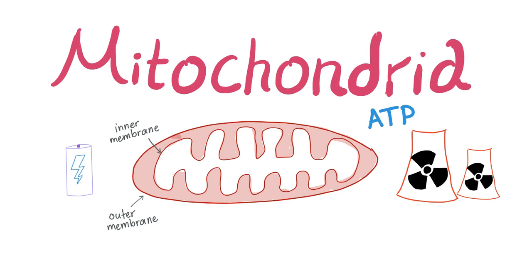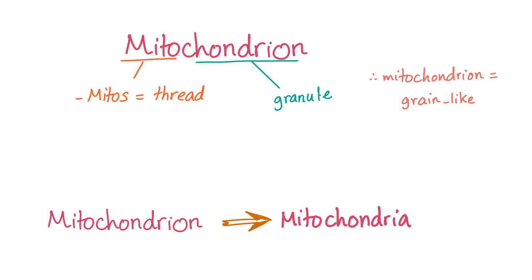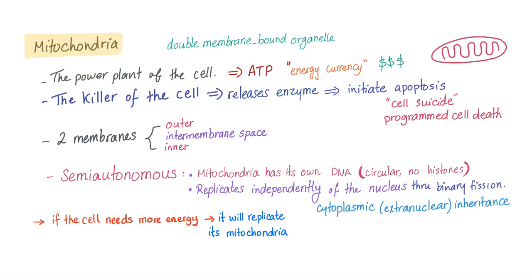The power plant, or the powerhouse of the cell. It produces energy in the form of ATP — adenosine triphosphate. It has an outer membrane and an inner membrane, with infoldings of the inner membrane called cristae. The word mitochondrion: 'mitos' means thread, 'chondria' means granule. Mitochondria is a membrane-bound organelle.